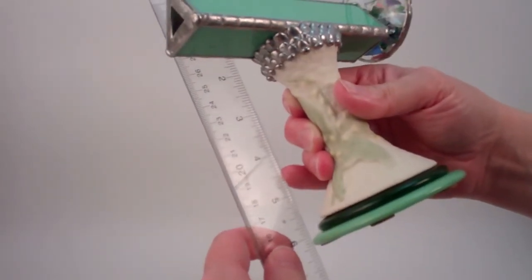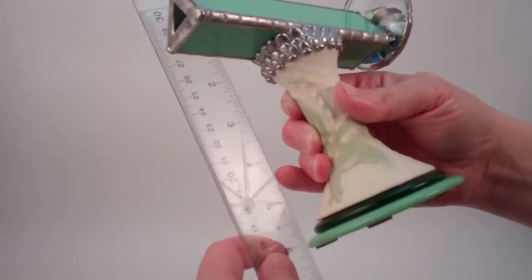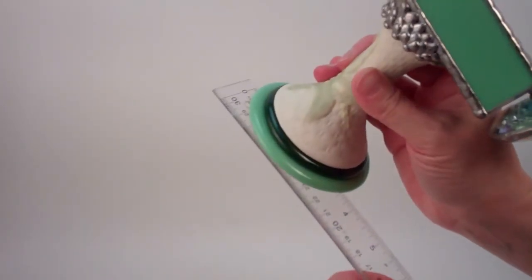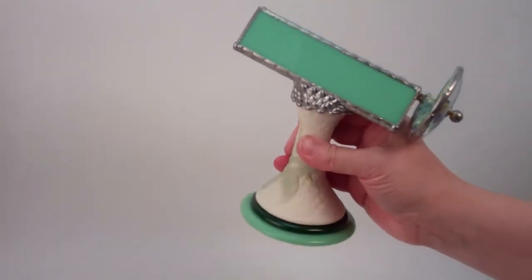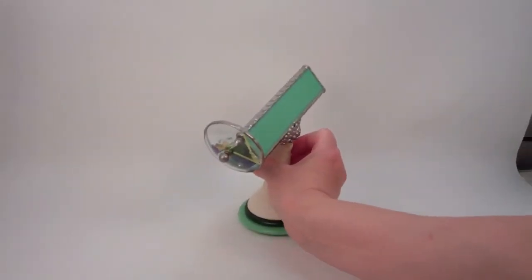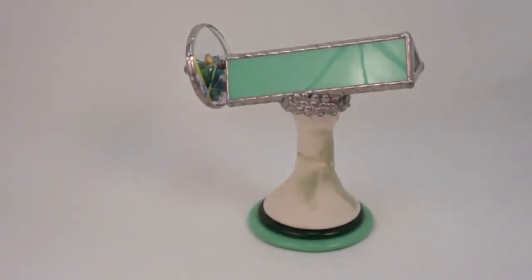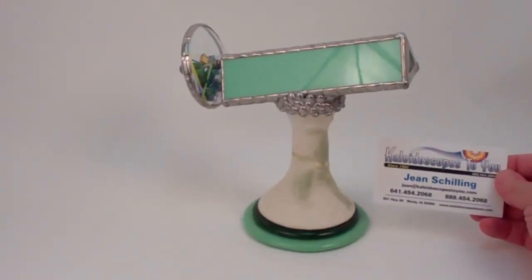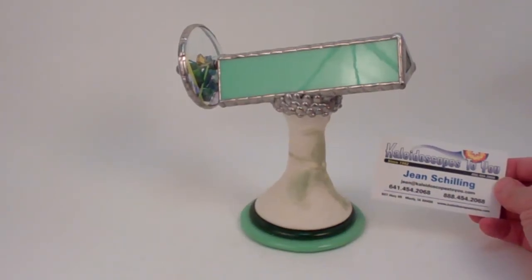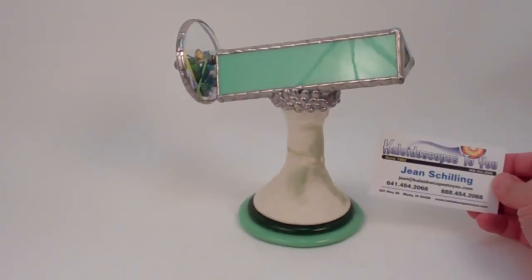Its overall height at its highest is about six and a half inches and it has a width across the bottom just over three and a half inches. This is a delightful porcelain and mint green parlor kaleidoscope and this is currently available at kaleidoscopestoyou.com